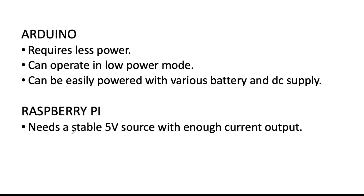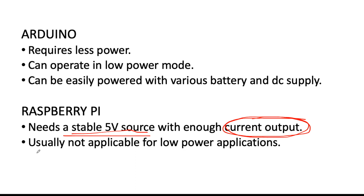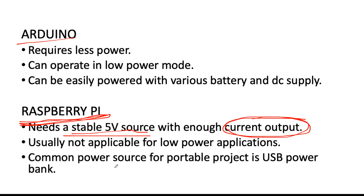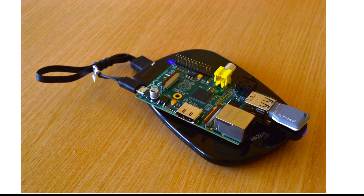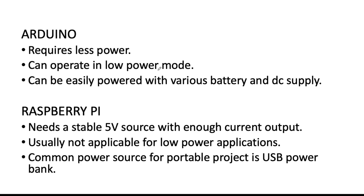The Raspberry Pi needs a stable 5V DC source with sufficient current output so that it can boot up properly. Generally, a Raspberry Pi is not suitable for low power applications unlike an Arduino, because it runs more extensive processes. The most common portable power source for a Raspberry Pi is a USB power bank, as shown here with the Raspberry Pi connected via its USB input. Overall, both Raspberry Pi and Arduino can be used for portable or AC-powered applications, but power requirements are a very important consideration.